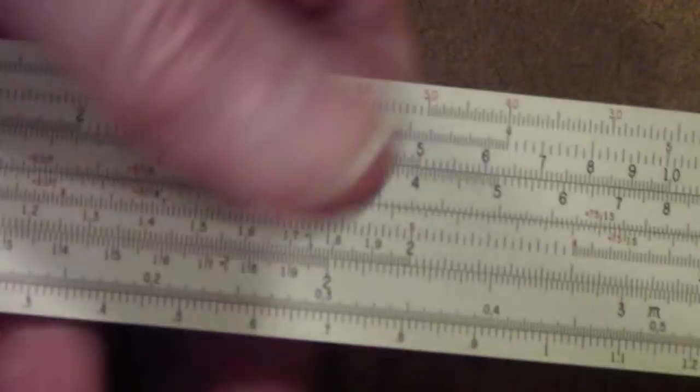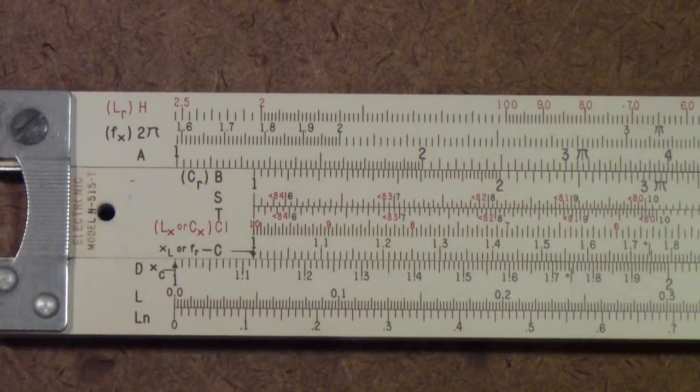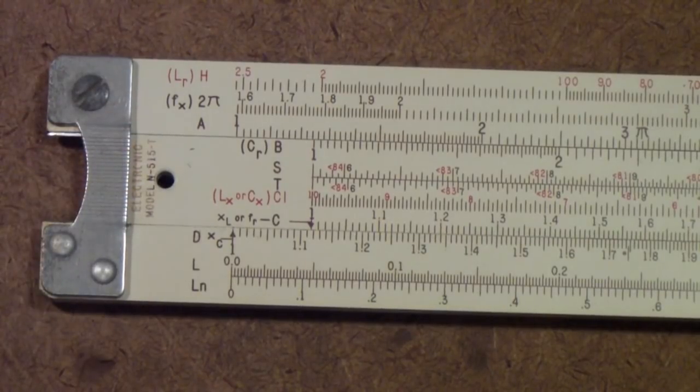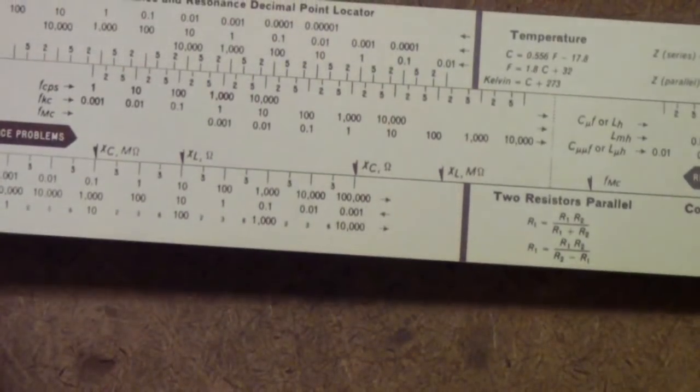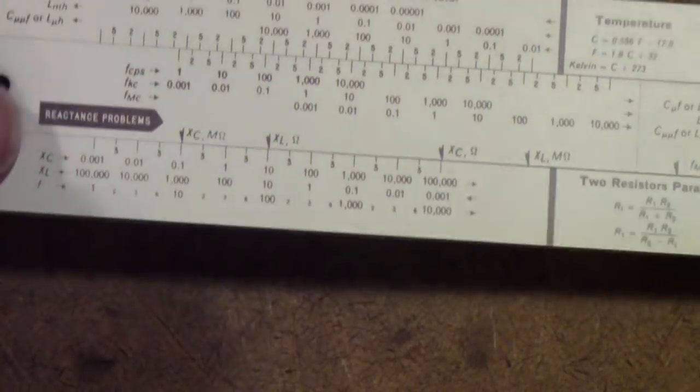Here is an aluminum. In this case, this is a specialty rule done for the Cleveland Institute of Electronics. At the end here, you may see it says electronic model N515T. And, notice this is not really a duplex rule. On the back, even though it has a cursor, the cursor is used for doing things like determining the magnitude of impedances and things of that sort.